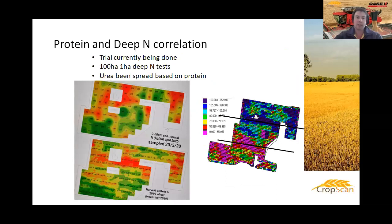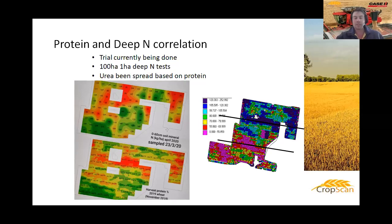Some things we're finding: Farm Week from tomorrow they're doing a trial at five farms — 100 hectares with 1-hectare deep-end soil tests, giving a 0–60 cm deep-end soil test every hectare. This shows the deep-end nitrogen sampled in May this year. This map here is the harvest protein from 2019 wheat, and as you can see there's quite a good correlation. That was really the cementer for us to have confidence in the data — essentially our protein maps are just a deep-end nitrogen indicator, which is pretty cool.